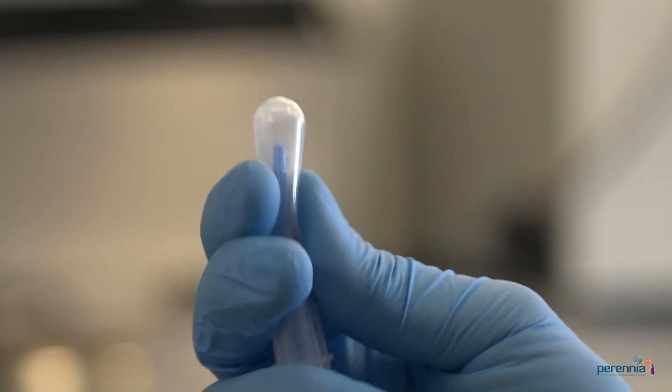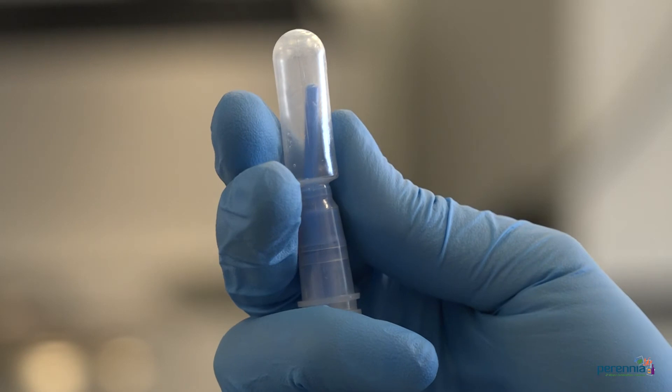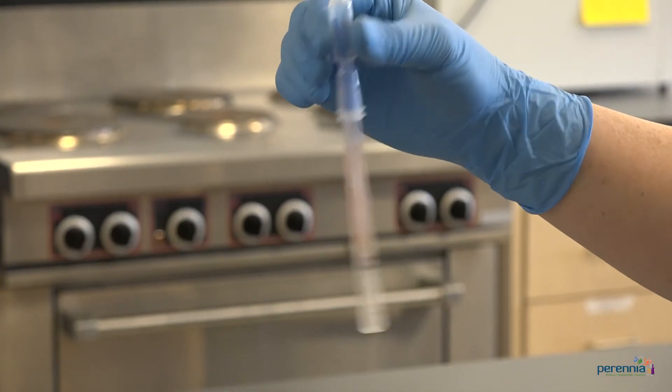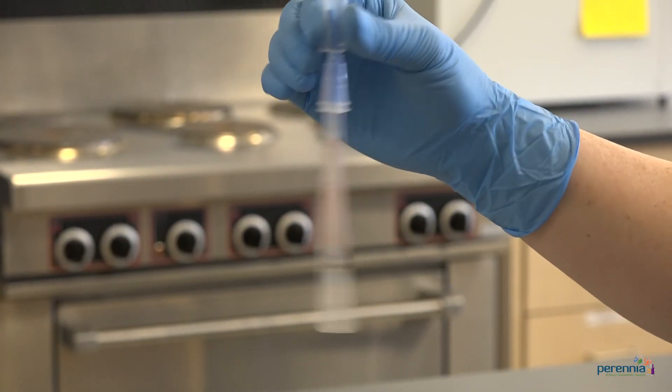Step number seven, squeeze bulb twice to move liquid into the tube. Step number eight, shake for five seconds.